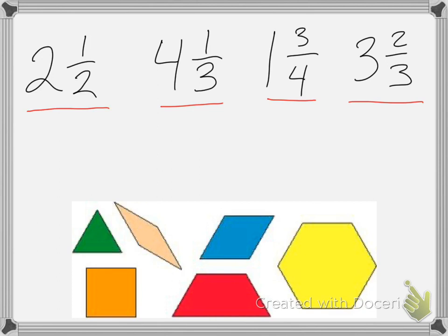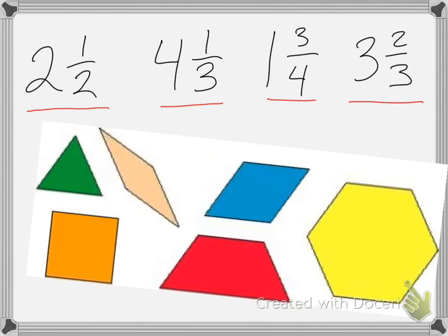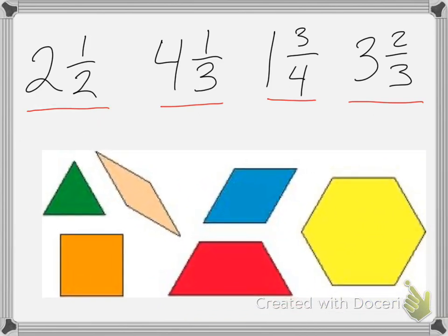If we look at our pattern blocks, they look like this. A yellow pattern block equals one whole, equals one.